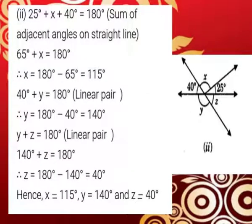Second subdivision: In the given figure we have to find the values of x, y, and z. We frame the equation: 25 degrees plus x plus 40 degrees equals 180 degrees, since the sum of adjacent angles on a straight line is supplementary. So 25 plus 40 is 65, giving 65 degrees plus x equals 180 degrees. Transposing, x equals 180 minus 65 degrees, which equals 115 degrees.